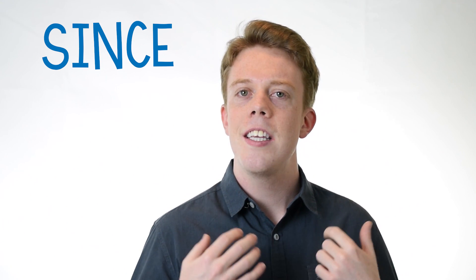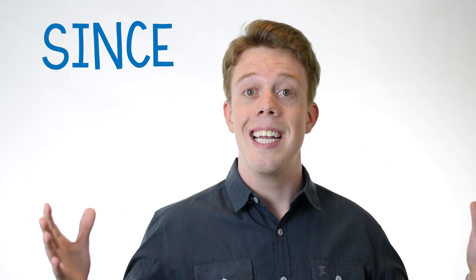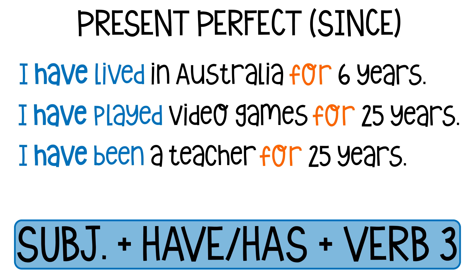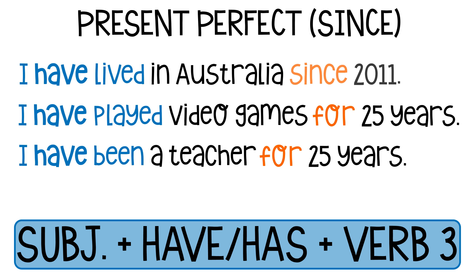So what about since? Since doesn't describe how long something has happened. Instead, it tells us about when it started, or the origin point. Here we have the same examples that we used with for. Let's see if we can rewrite them using since. My first sentence, I have lived in Australia for six years, means that the activity started six years ago. This lesson was made in 2017, so six years ago is 2011. Therefore, I can use since to say I have lived in Australia since 2011. Present perfect remains the same, but instead of using for plus how long, I can use since plus the starting point.